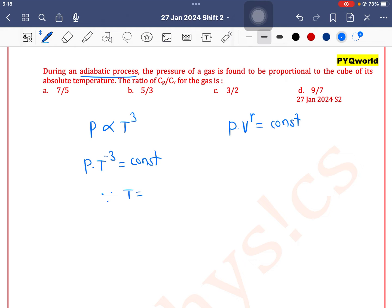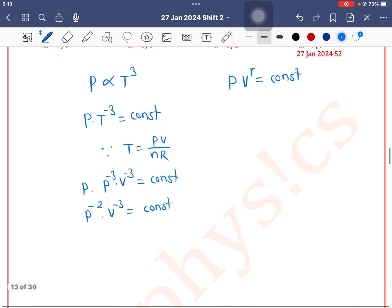Ideal gas equation says T is equal to PV by NR. So P into P to the power minus 3, V to the power minus 3, NR on the right side, so P to the power minus 2 into V to the power minus 3 is equal to constant. If we adjust the powers, P into V to the power 3 by 2 is equal to constant.